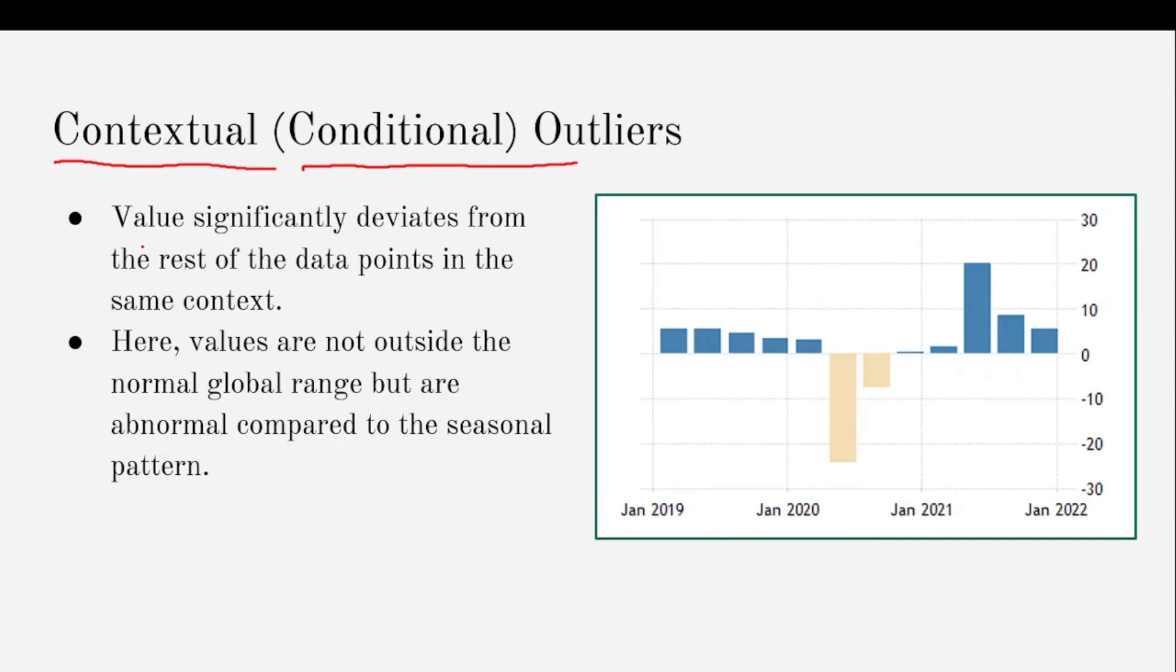The third type of outlier is contextual or conditional outliers. Conditional outliers are the outliers whose value significantly deviates from rest of the data points in the same context. An important point to note here is that the values are not outside the normal global range, but are abnormal compared to the seasonal pattern.